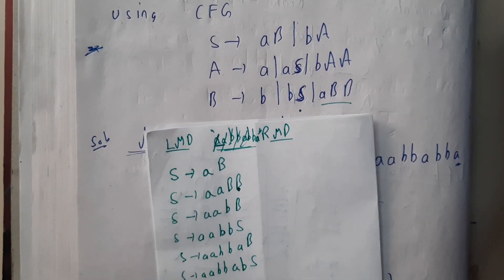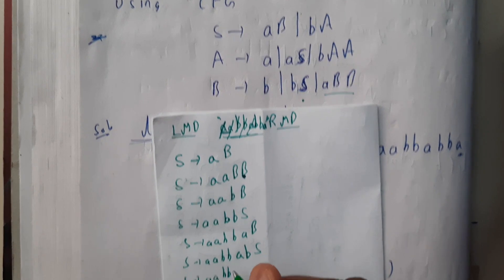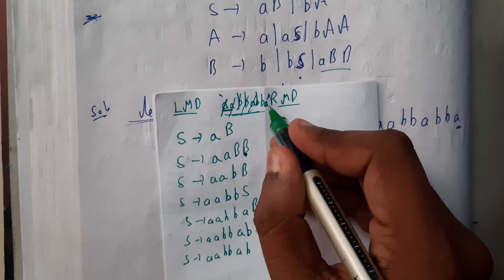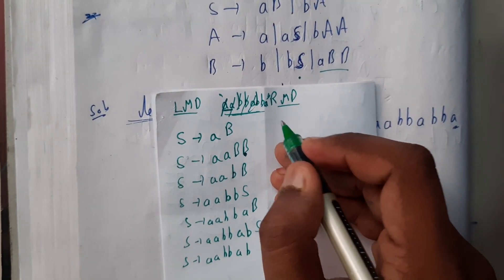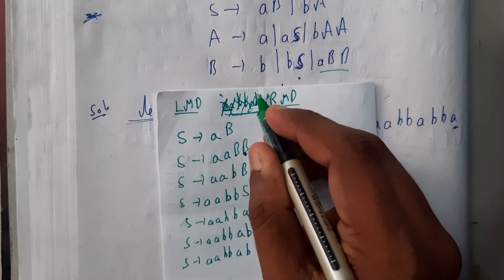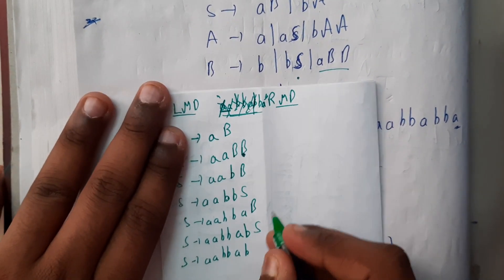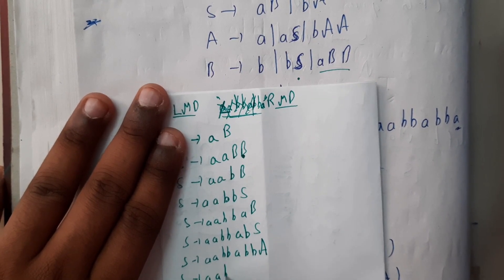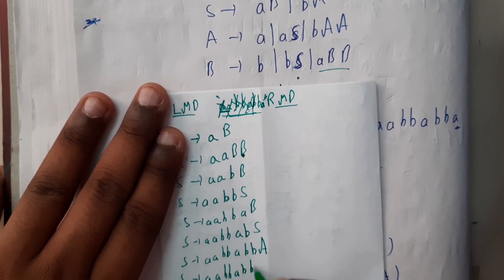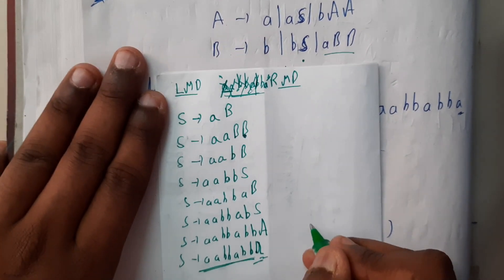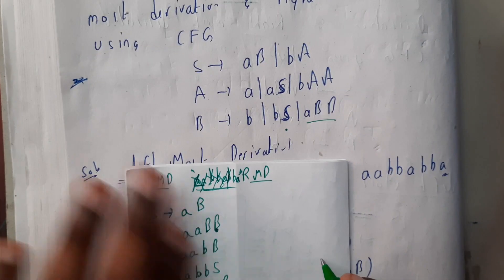We still need 'bba' left, so take BS again. S tends to 'abb', then in place of S we need one more 'b', so we get 'abba'. 'aa' is done, 'bb' is done, 'a' is done, 'b' is done — we just need 'ba'. Replace with lowercase B and A. So S tends to 'aabbabba' — we got the final result for leftmost derivation.